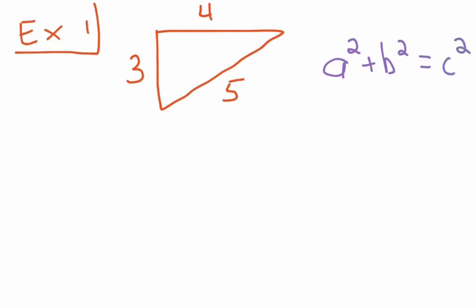And as I said in the intro, we're going to take the longest side and substitute it in for C. So 5 will get substituted in for C. That means 3 and 4 get substituted in for A or B. It doesn't matter which one goes in where.